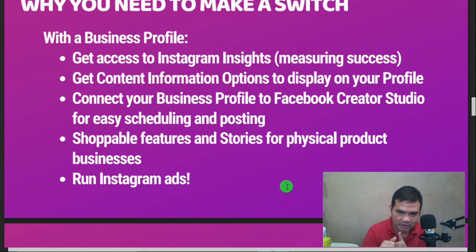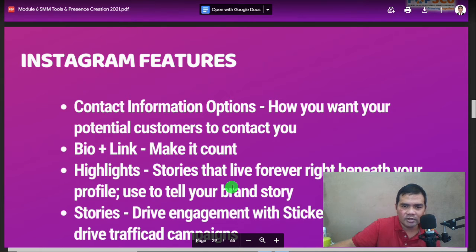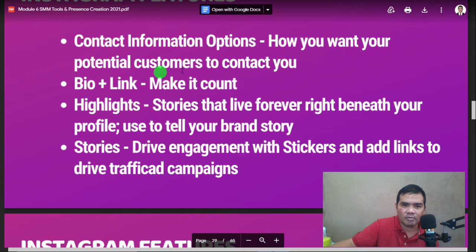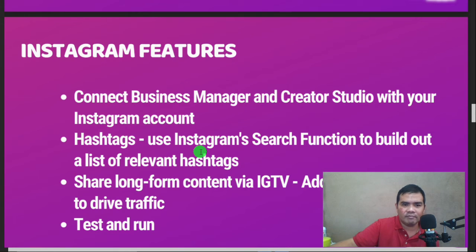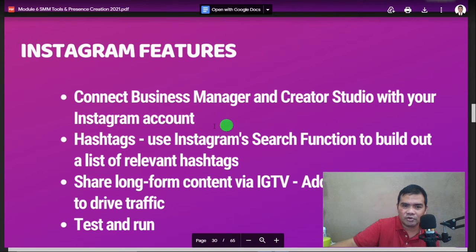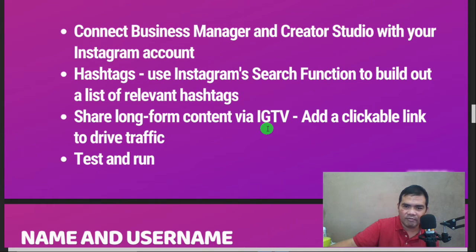You can get content information options to display on your profile, and connect your business profile to Facebook Creator Studio for easy scheduling and posting. Instagram also has shoppable features and stories for physical product businesses, as well as Instagram ads. Other features include contact information options, bio plus link, highlights, and stories. Hashtags are very important on Instagram — you need to research and be creative with them, keeping them relevant to your brand.